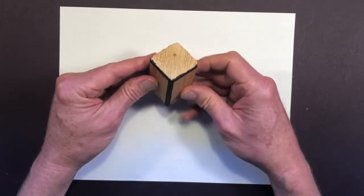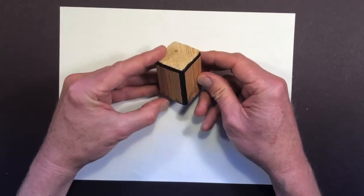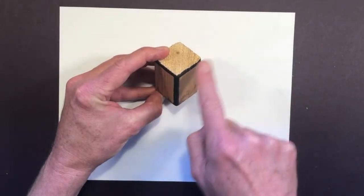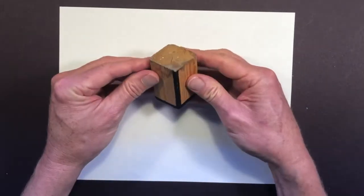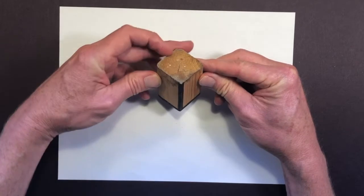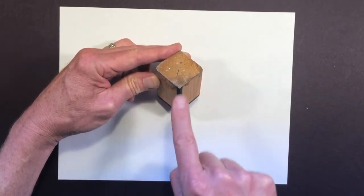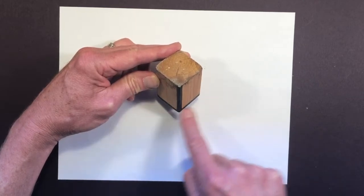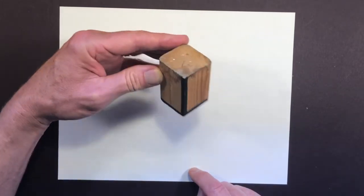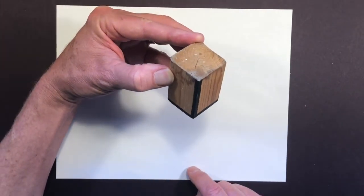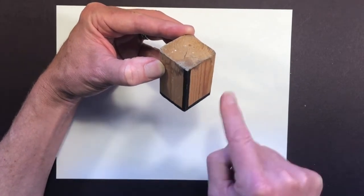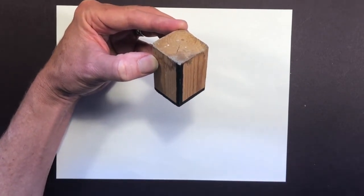If you hold it like that it kind of looks like a Y. Can you see the Y shape? If I hold it this way it kind of looks like an upside down, maybe two L's that are next to each other. Mirror image L's. So I'm going to look at that and I'm going to draw the basic L shape and show you how we draw a cube.